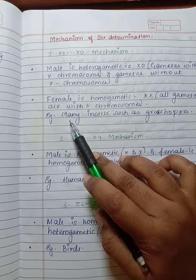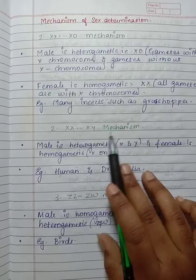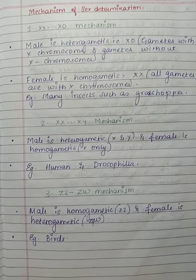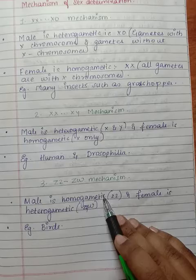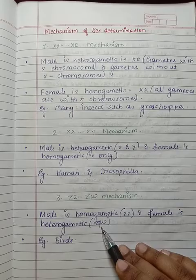Second is the XY and XX mechanism. Male is heterozygous, that is XY, and female is homozygous, that is XX. For example, human and Drosophila. Third is the ZZ and ZW mechanism. Male is homozygous ZZ and female is heterozygous ZW, for example birds.